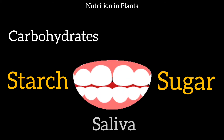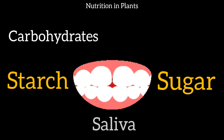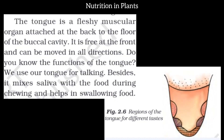The conversion of starch into sugar in the mouth is the first step of digestion. The tongue is a fleshy, muscular organ that can move in every direction. It has three main functions.